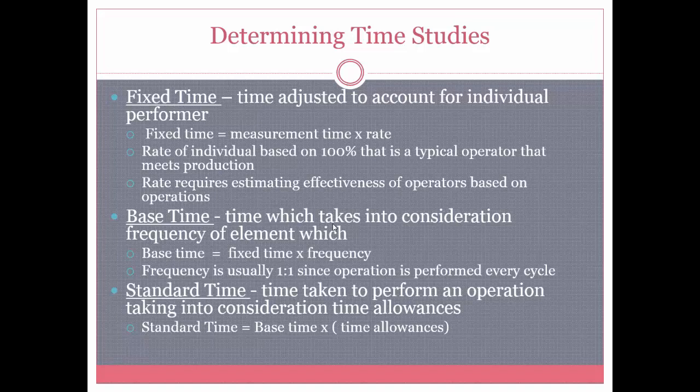You would multiply their time by 100%. But if you're working with a very fast operator that you have determined throughout time is very quick — his rate of work is faster — it could be 120%, and you would have to multiply the measured time by 120%. To determine the rate of an operator, it simply requires estimating the effectiveness of an operator based on operations and based on being used and accustomed to the process.